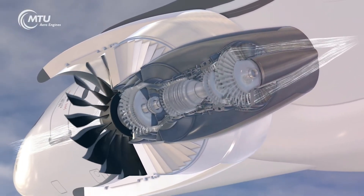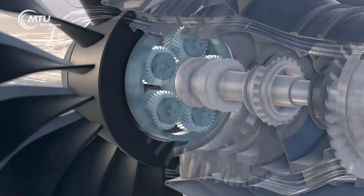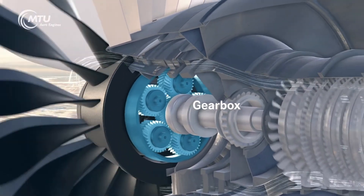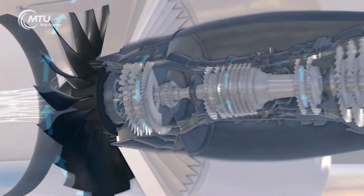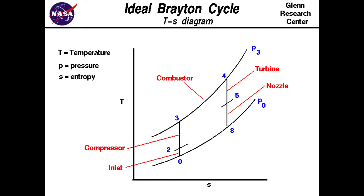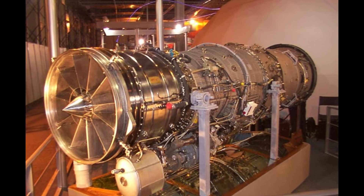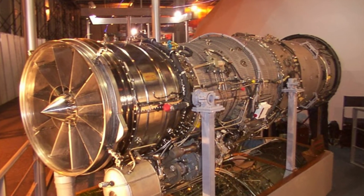The turbine, which extracts energy from the high-temperature gas to drive the compressor and fan, also presented challenges. Efficient turbomachinery design involves optimizing the thermodynamic cycle, typically the Brayton cycle for turbofan engines. The Kaveri engine experienced issues with turbine efficiency and material performance. The turbine blades face thermal fatigue and erosion due to the extreme temperatures and pressures, limiting their durability and overall performance.